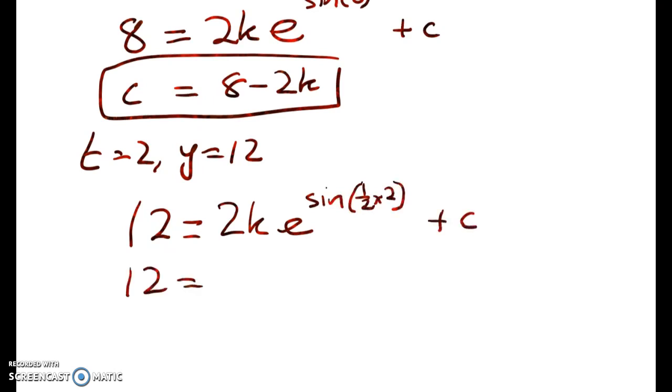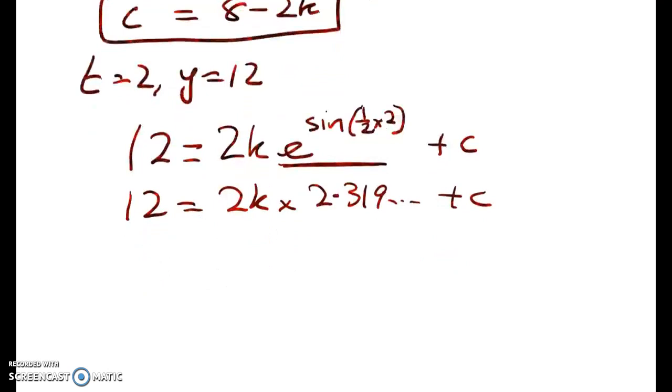So that gives me 12 equals 2k. Now this number here works out to be 2.319 blah, blah, blah, something pretty ugly, plus c.